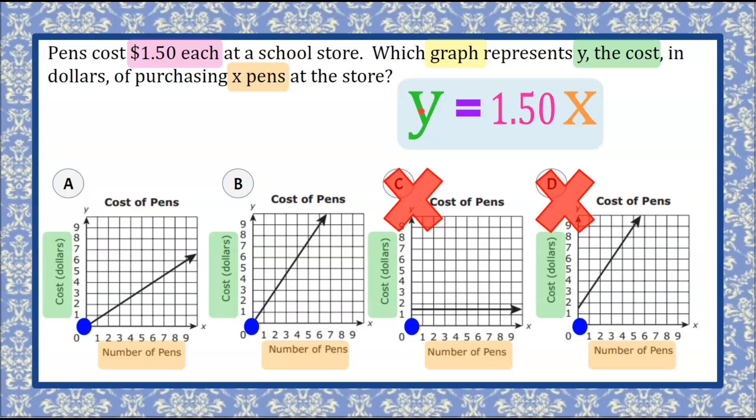Let's just look at purchasing one pen, because that's the easiest amount to buy. One pen means X is one, $1.50 times one. So one pen would cost $1.50. Let's look at our graphs.